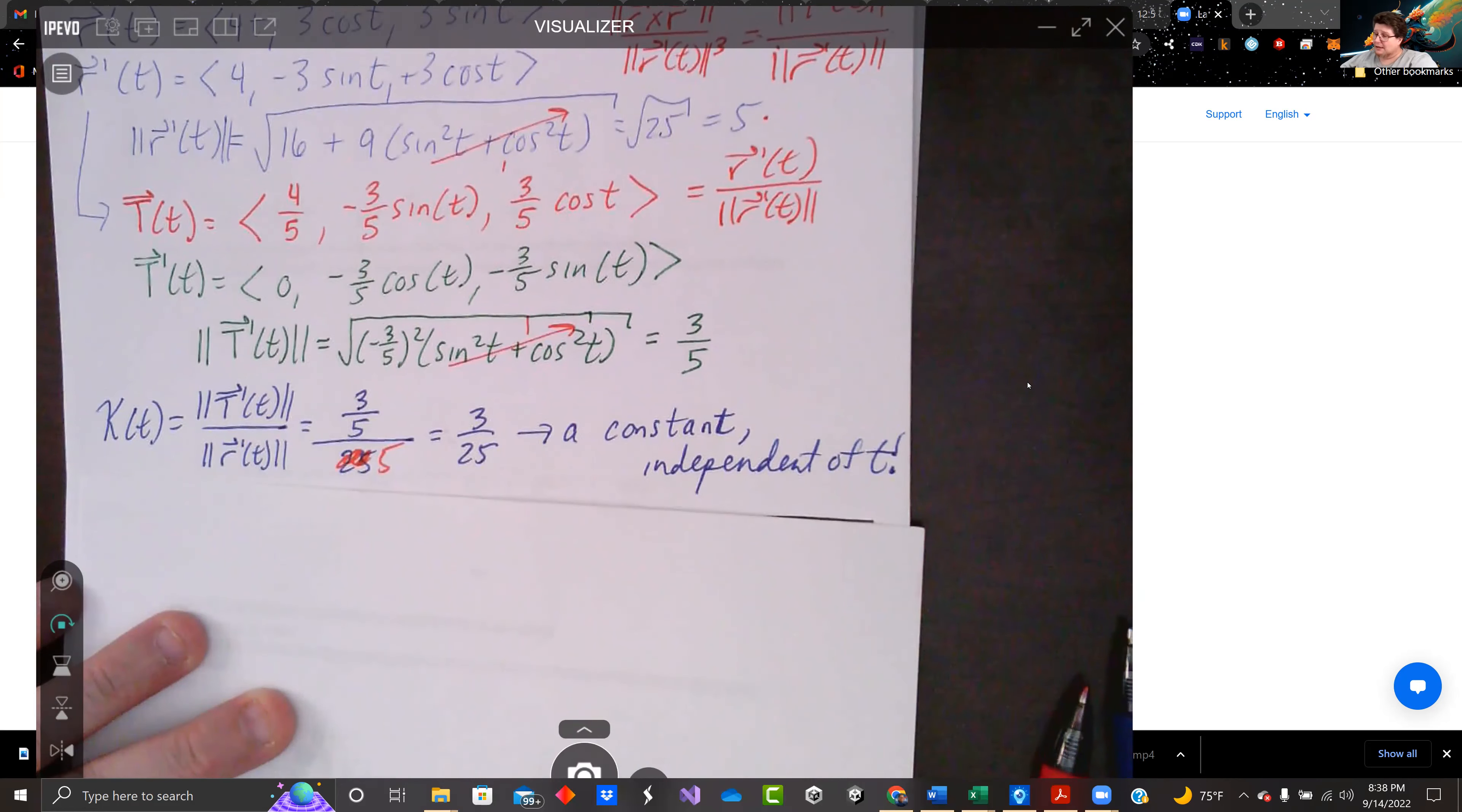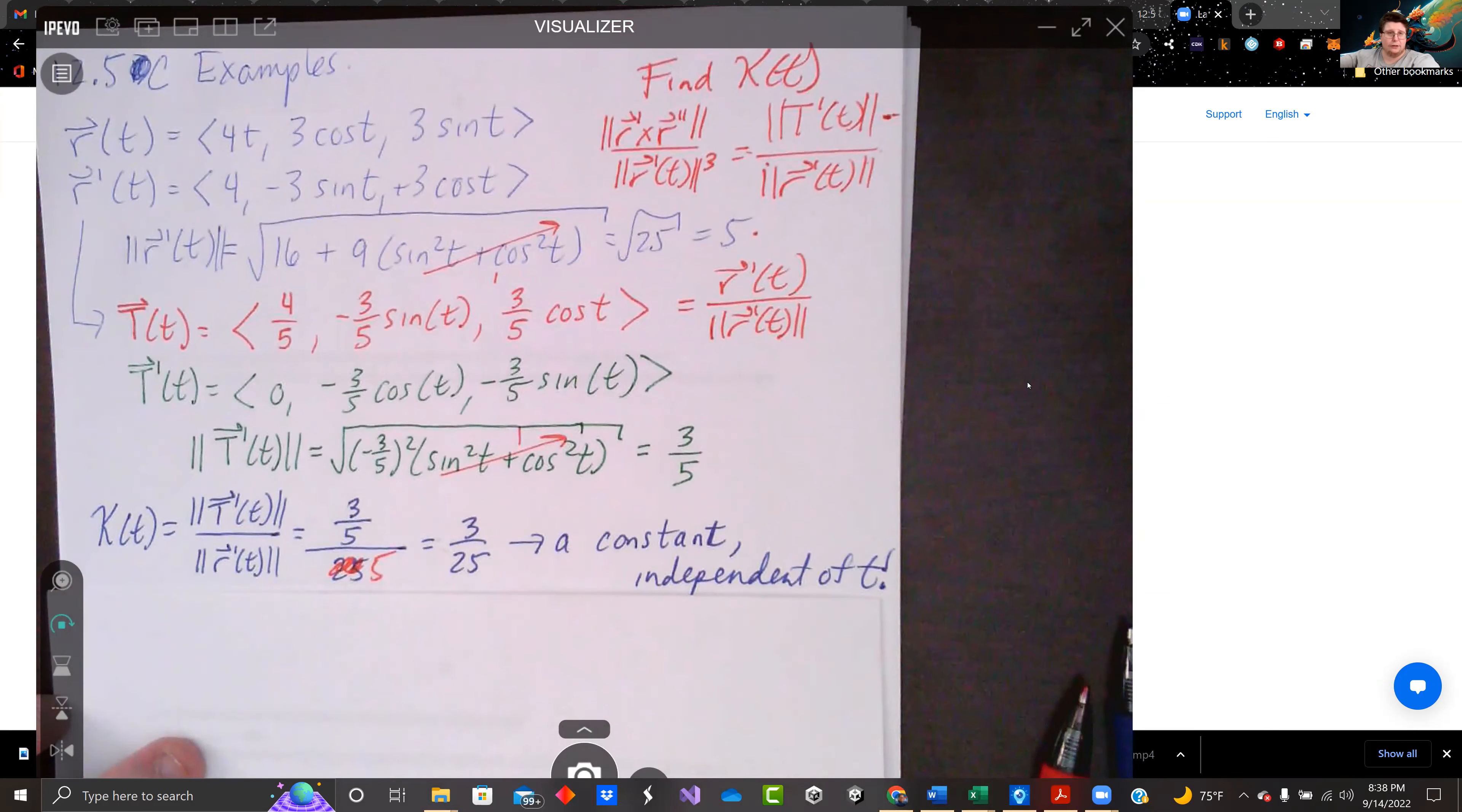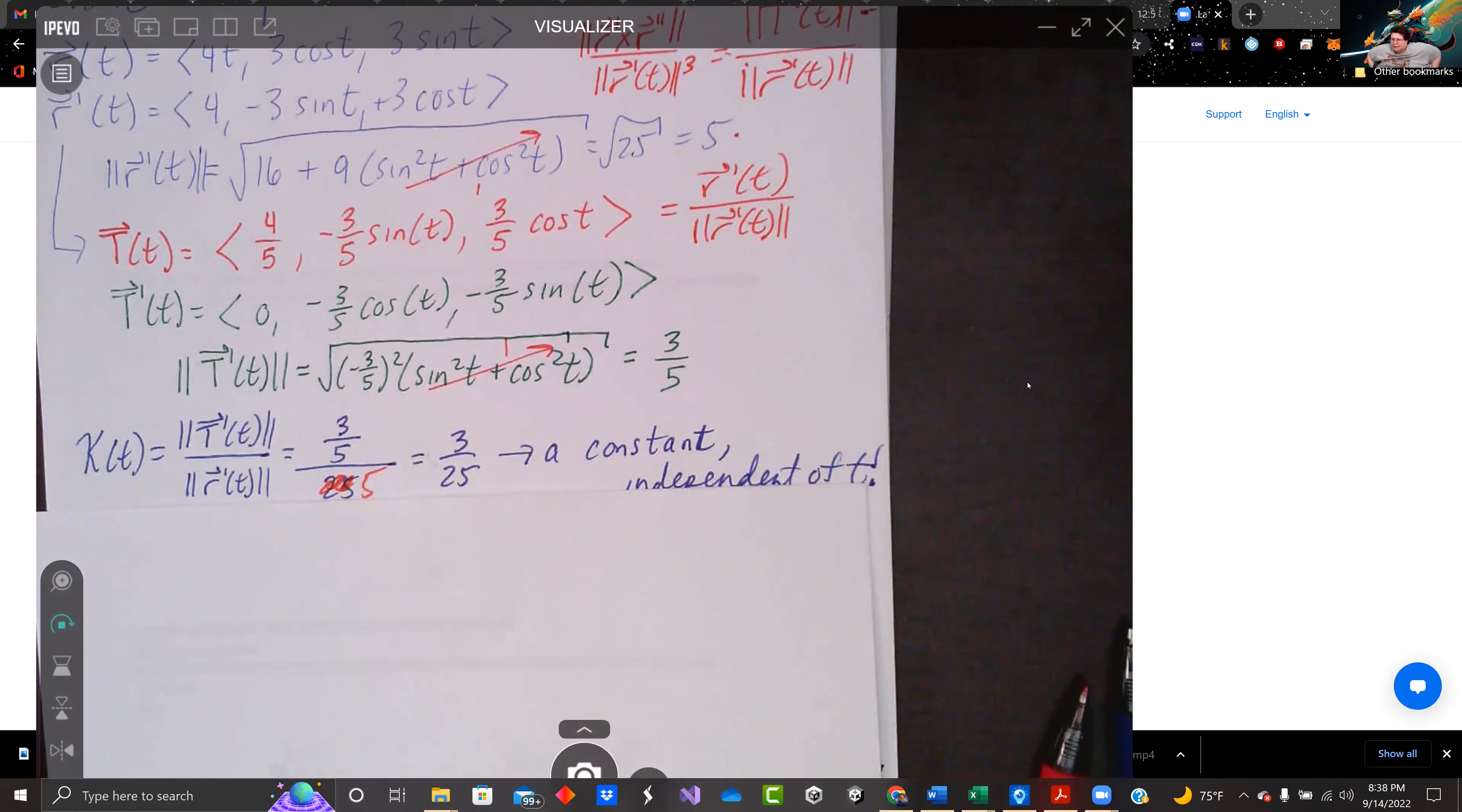R of t had a 4t in it, so it's actually spiraling out along the x-axis. But in the yz, like if you're looking on the yz plane, it looks like a circle. But that curvature remains constant since that spiral is steady the whole way. It never changes. Spiral is steady.